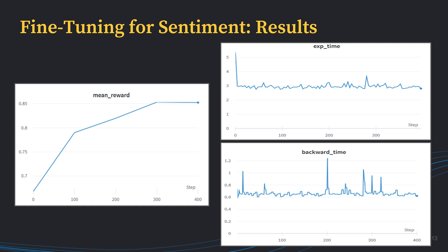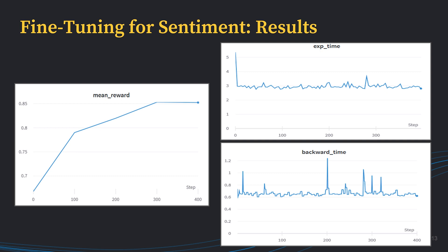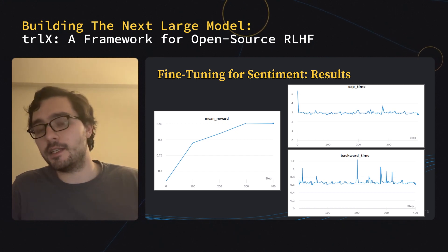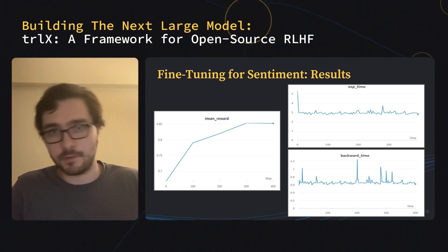Drawing your attention to the graphs on the right-hand side, we have the top which is explore time and the bottom which is backward time. These represent the time the algorithm takes to do the two main components of the reinforcement learning training loop with a language model. Explore time represents the time it takes to generate rollouts and allow the model to generate new experiences, which are stored in a replay buffer and used at train time. This takes a while — a 6 billion parameter model is relatively expensive to infer, and we're generating a story which means it needs to be inferred up to 40 times for each movie review, taking up to three seconds. It's definitely the bottleneck. Compare this to the backward pass time, which is a fraction of the rollout time, so optimizing rollout is quite ideal.